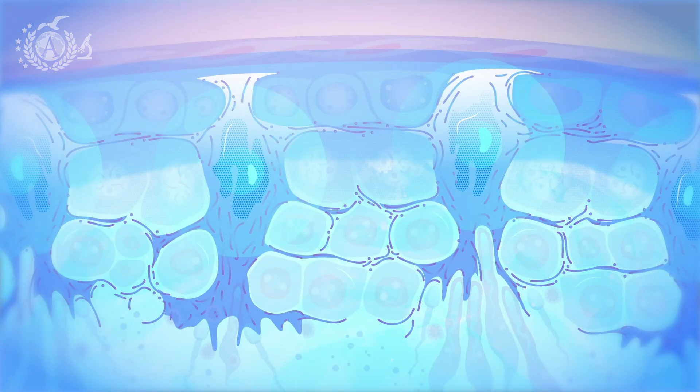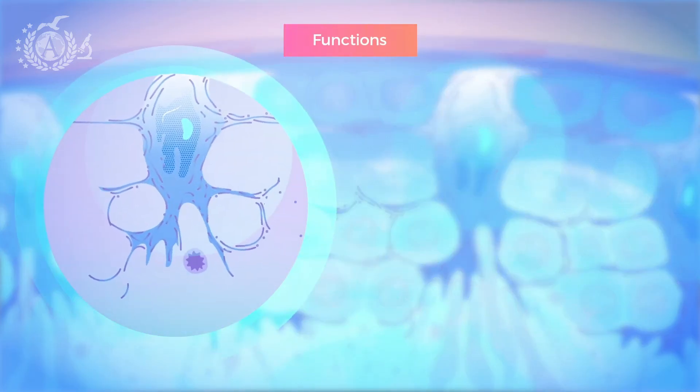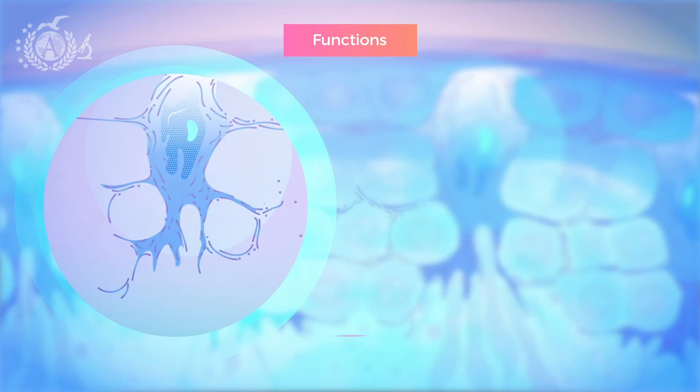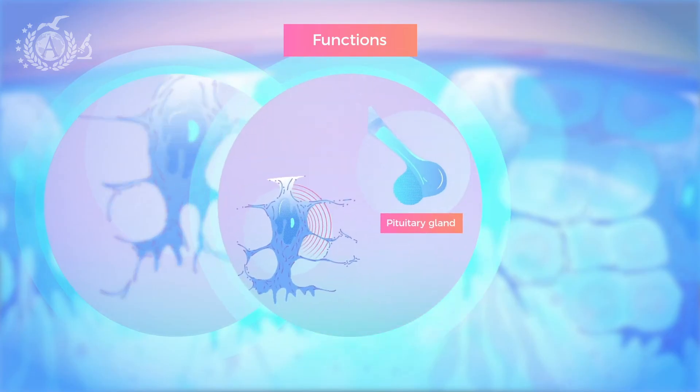But that's not all. As mentioned earlier, the functions of Sertoli cells are numerous. In fact, they can also take part in selecting germ cells, eliminating those in a degenerative state by phagocytosis. And as for the stimulation of the pituitary gland, it is important for the advancement of the sperm maturation process.